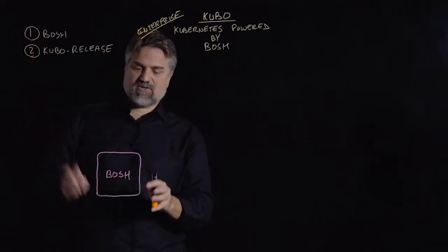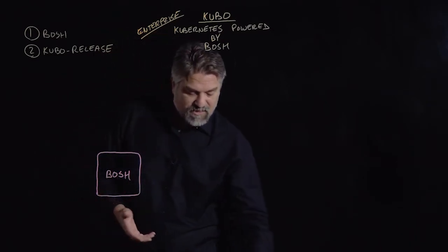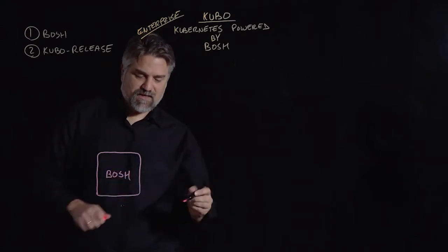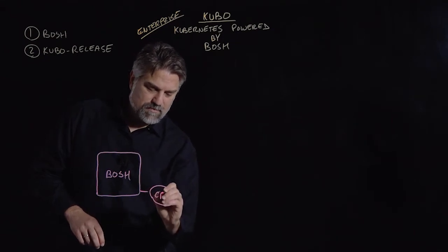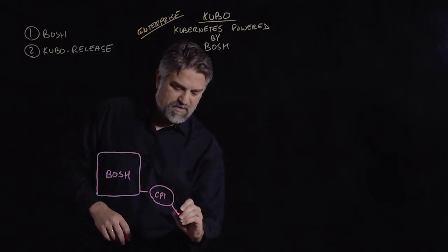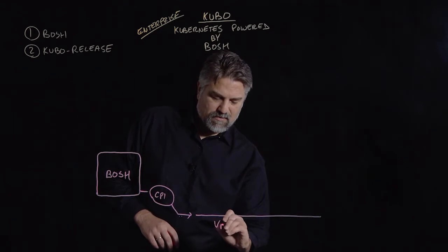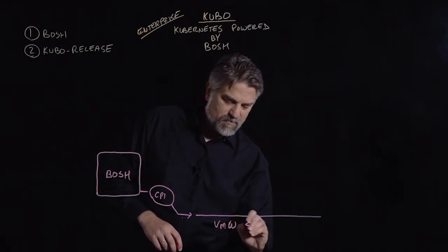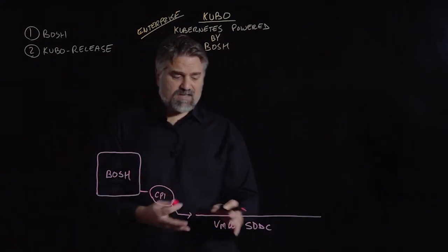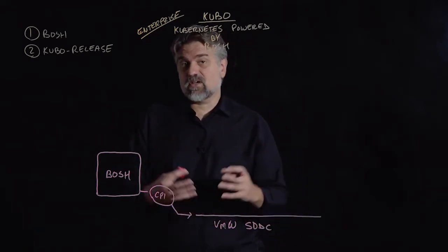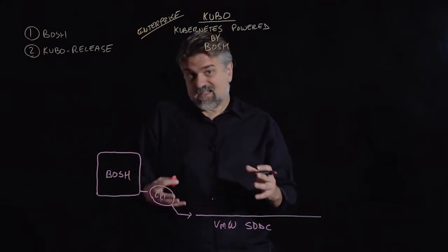Let's start with BOSH. BOSH is typically instantiated as a VM, and it's a VM that has a couple of capabilities we're going to leverage to deploy Kubernetes. One of those is this concept of an IaaS abstraction called the CPI, or the Cloud Provider Interface. Through a CPI, we can have BOSH deploy software across any IaaS. Today, we're going to be talking about the VMware SDDC. BOSH through the CPI can do things with the SDDC like create VMs, create storage, attach storage to VMs — all the primitives it needs to deploy a distributed software system like Kubernetes.